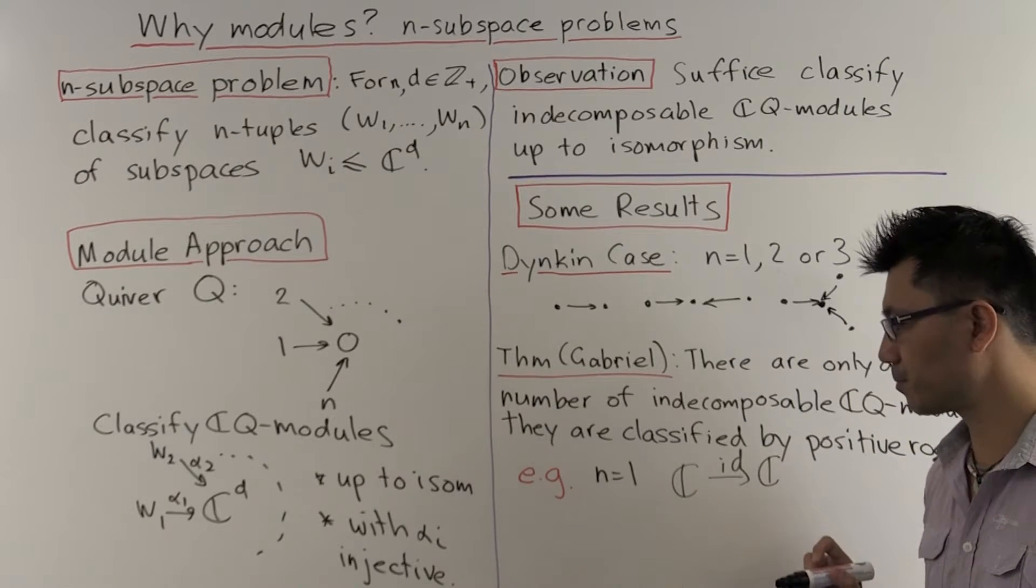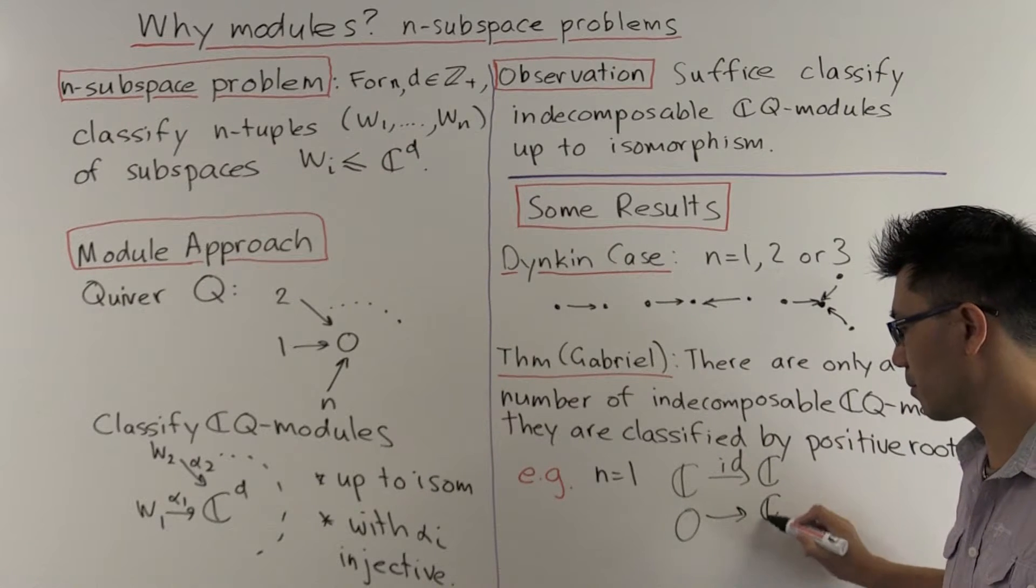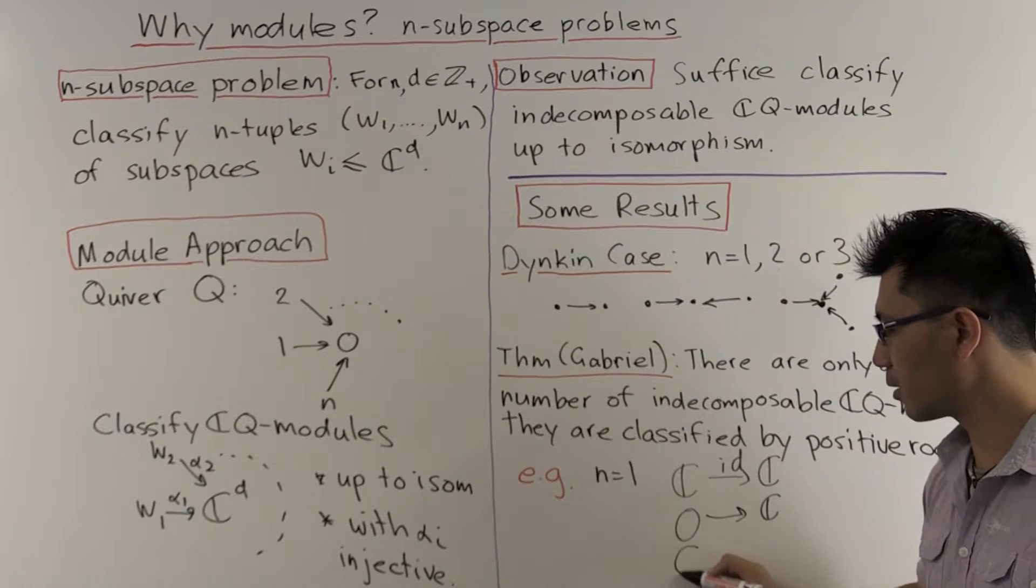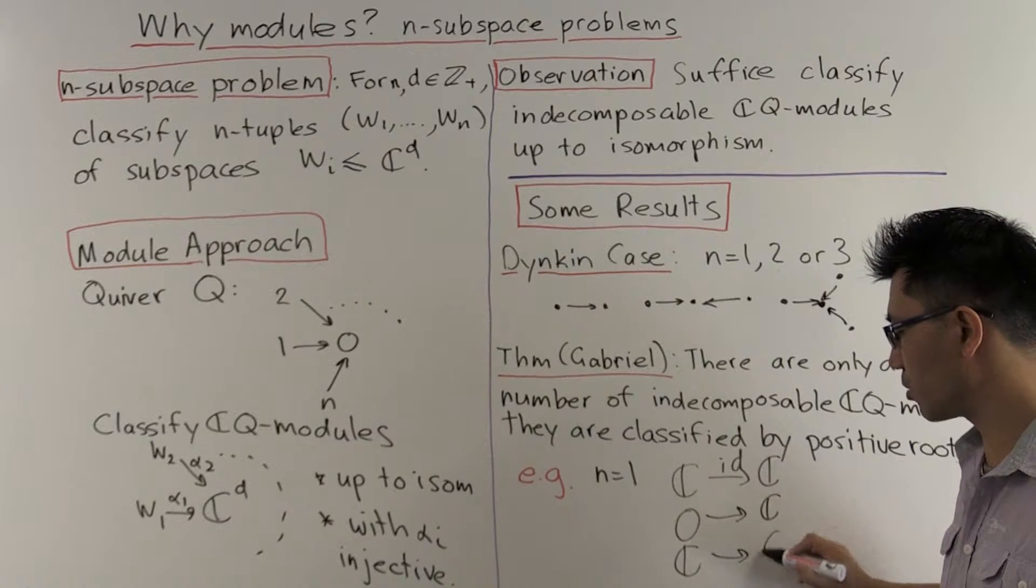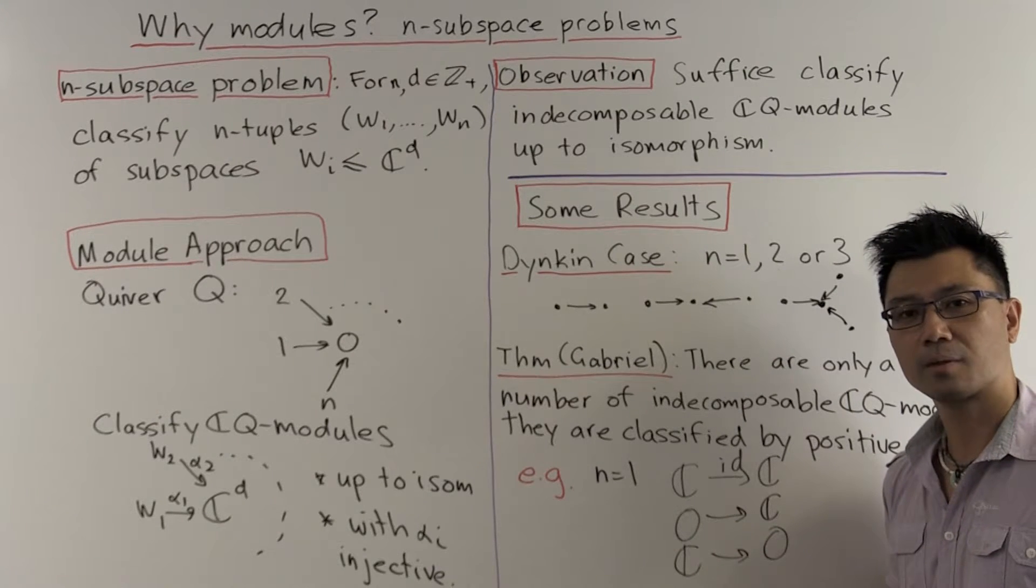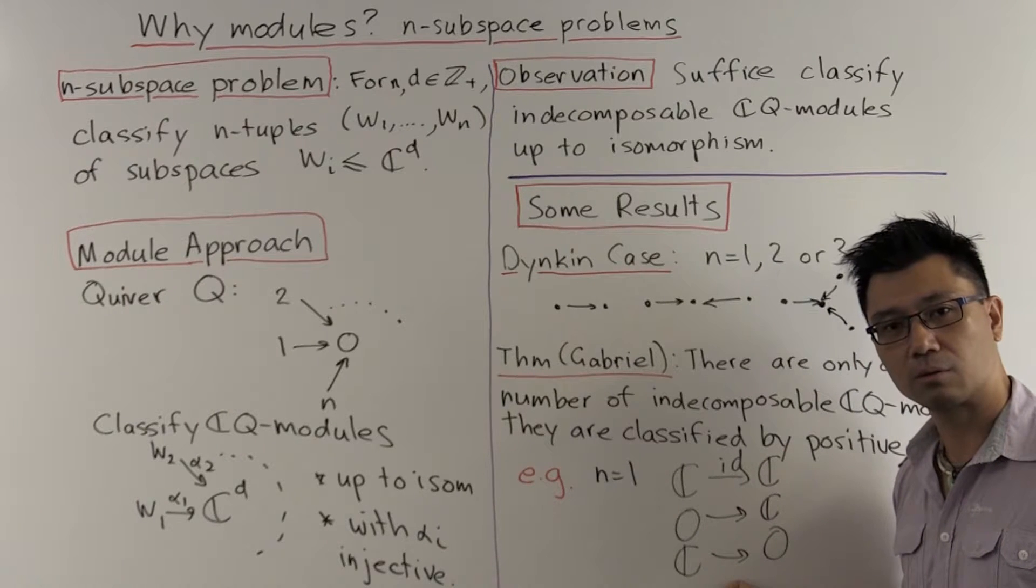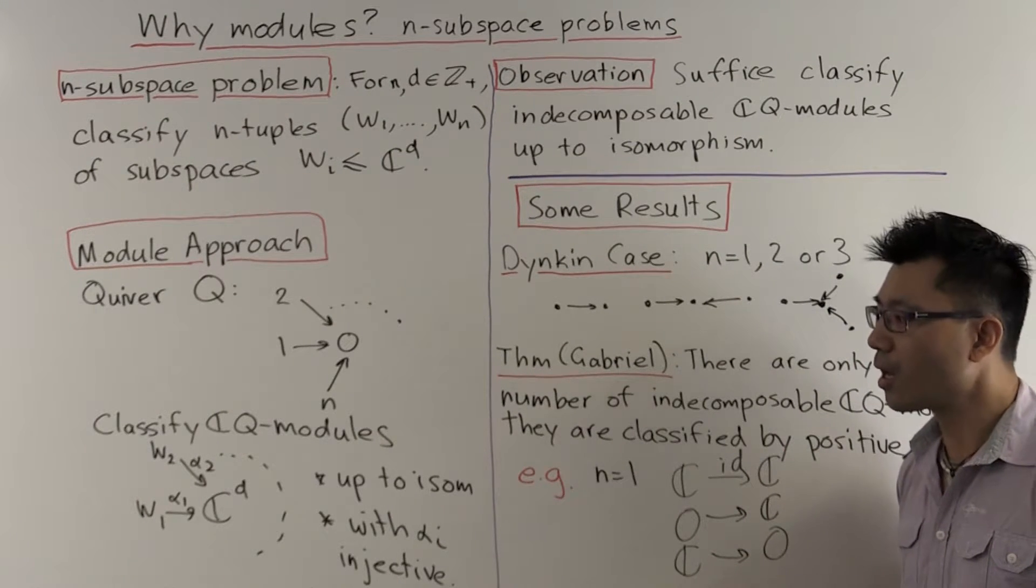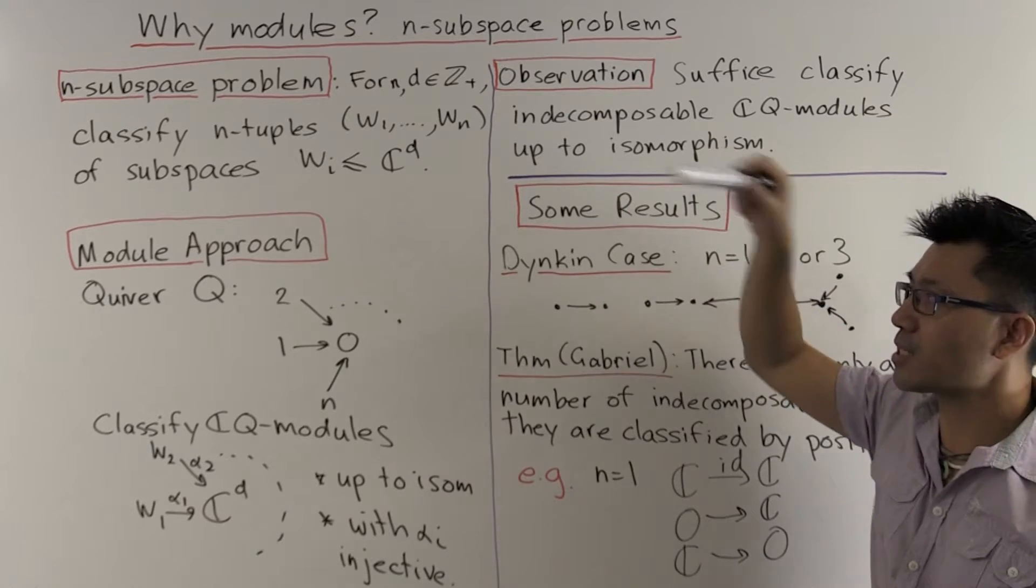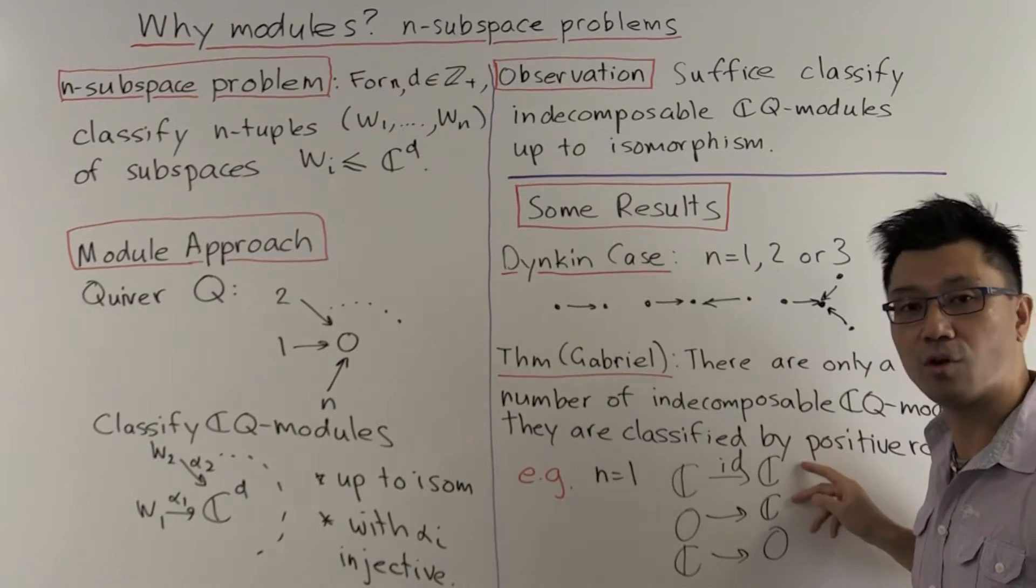You can have just the one-dimensional vector space C mapping to the one-dimensional vector space by the identity. That's one indecomposable module. Another one is the zero vector space mapping to C. Of course, that has to be the zero map. And the final one is C mapping to zero. Of these three, the first two are injective linear maps, but the last one is not. So in answering our original question, we only need to take direct sums of the first two modules.